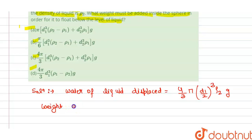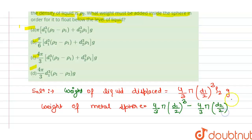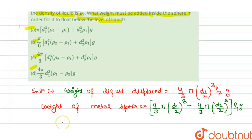Similarly, the weight of the metal sphere is equal to (4/3)π(d1/2)³ minus (4/3)π(d2/2)³, all multiplied by rho1 — the density of the metal — and g, the acceleration due to gravity.